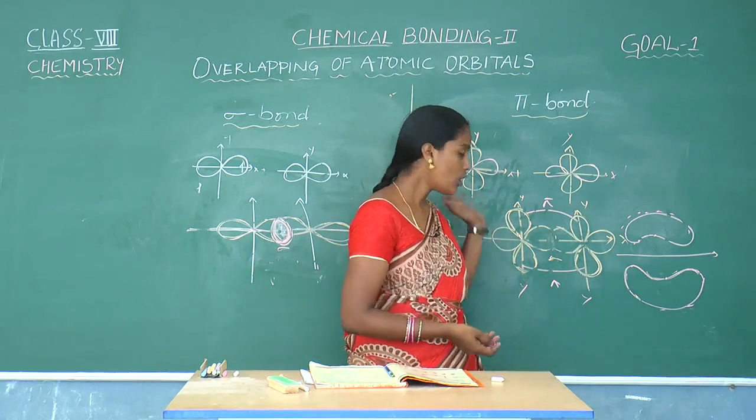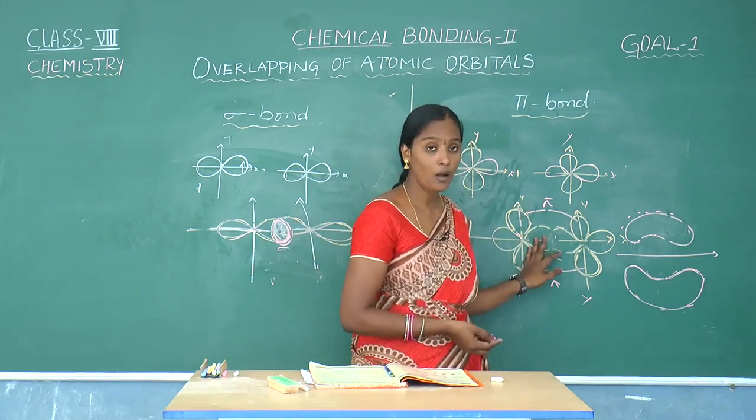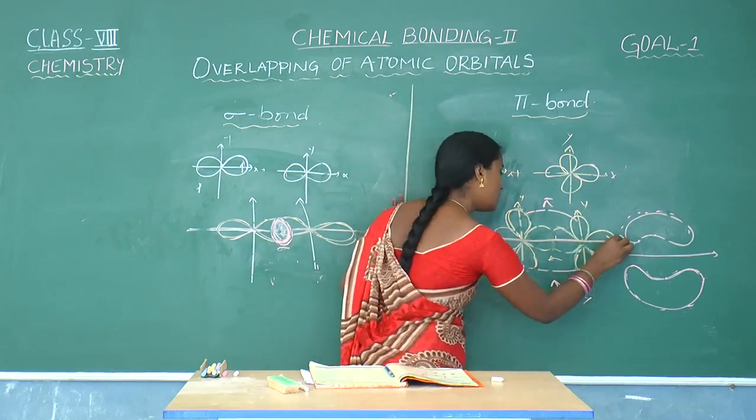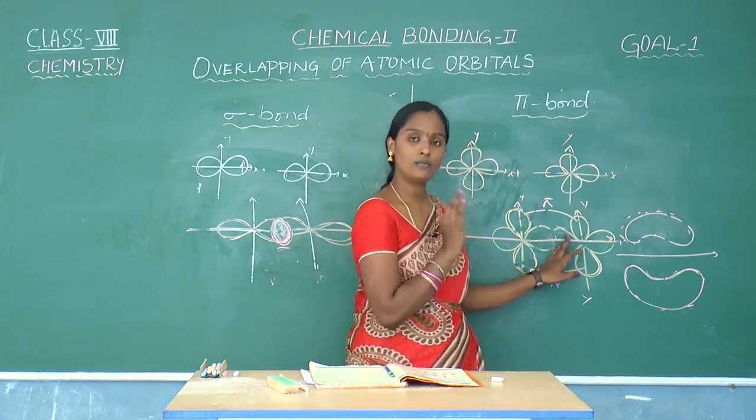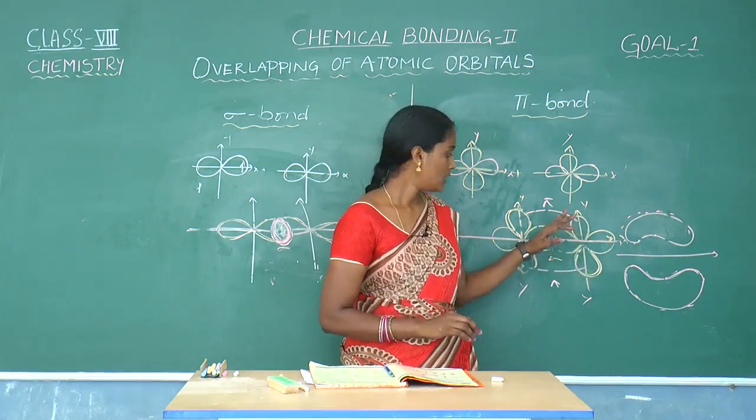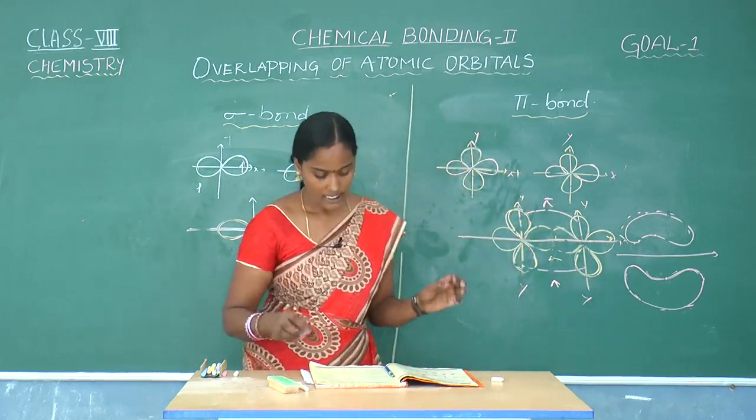But here without formation of sigma bond there is no pi bond formation, because along the internuclear axis first sigma bond should be formed. With the support of the sigma bond, then only pi bond takes place.